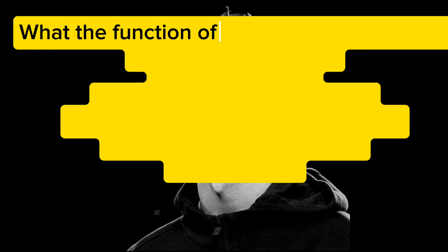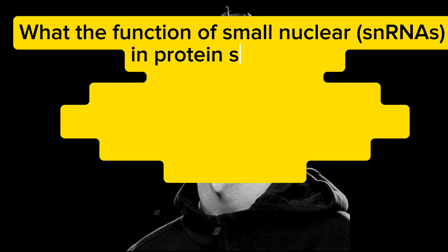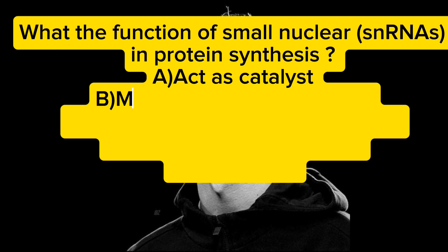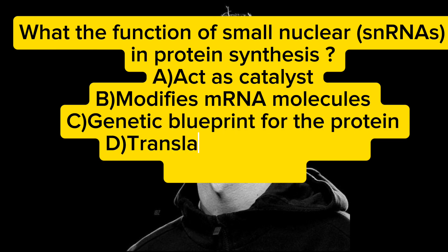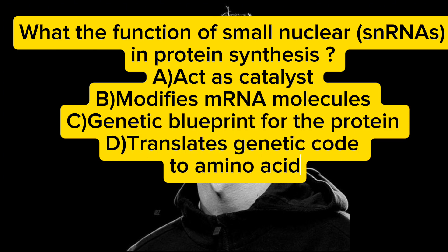What is the function of small nuclear snRNAs in protein synthesis? A) act as catalyst, B) modifies the mRNA molecules, C) genetic blueprint for the protein, D) translates genetic code to amino acids. The answer is B — modifies the mRNA molecules.